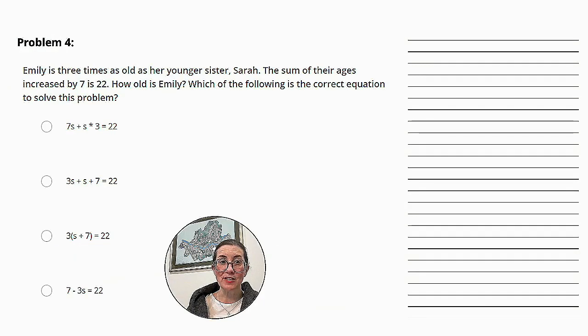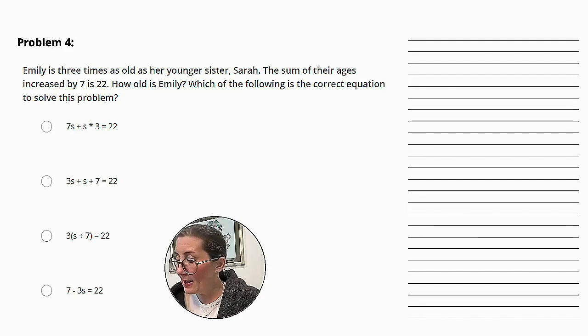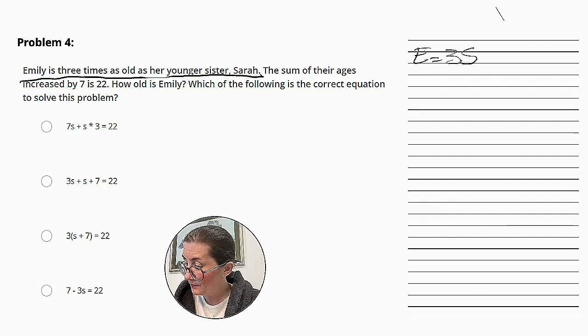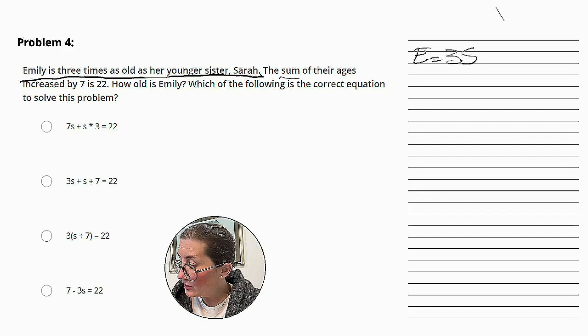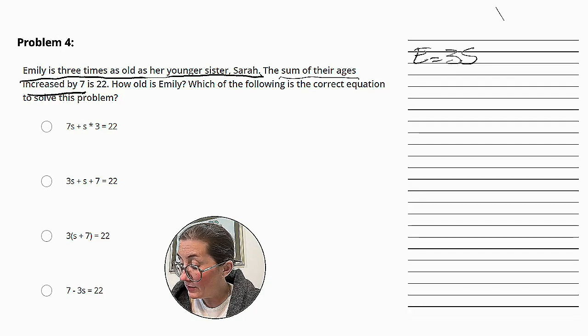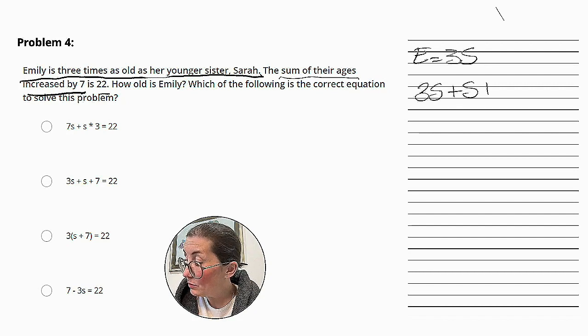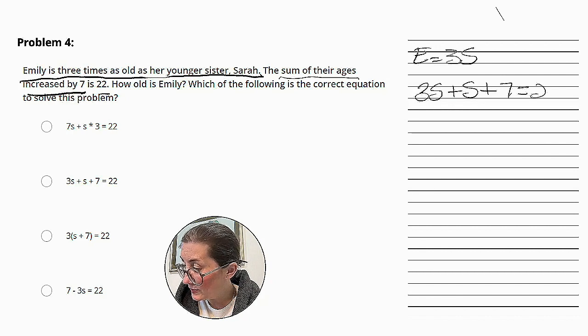Emily is 3 times as old as her younger sister Sarah. The sum of their ages increased by 7 is 22. How old is Emily? Which of the following is the correct equation to solve this problem? So let's look again. Emily is 3 times as old as her younger sister Sarah. So that means that Emily is equal to 3s. The sum of their ages plus 7 is 22. So 3s plus s plus 7 is equal to 22.